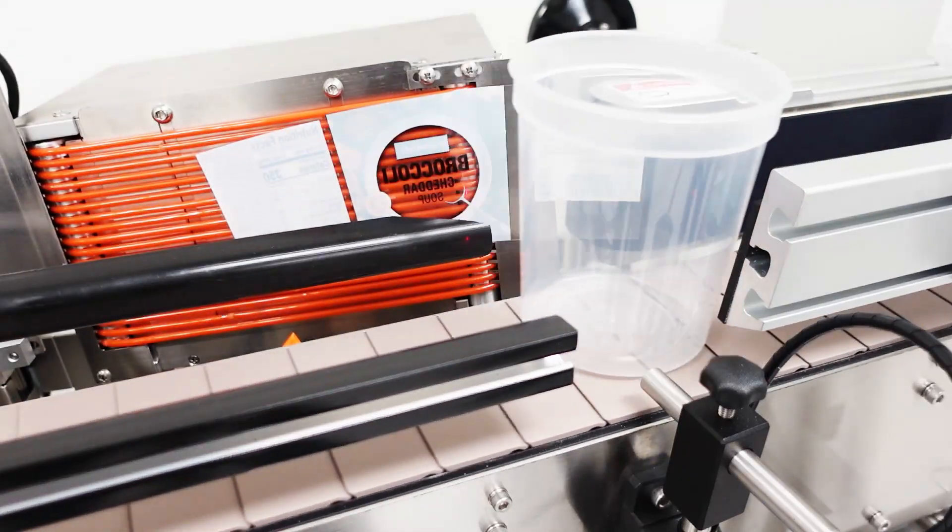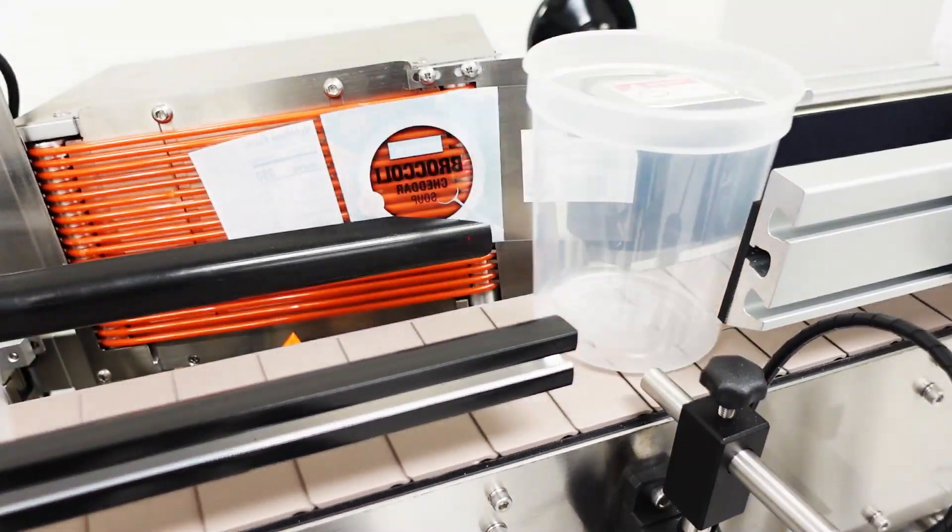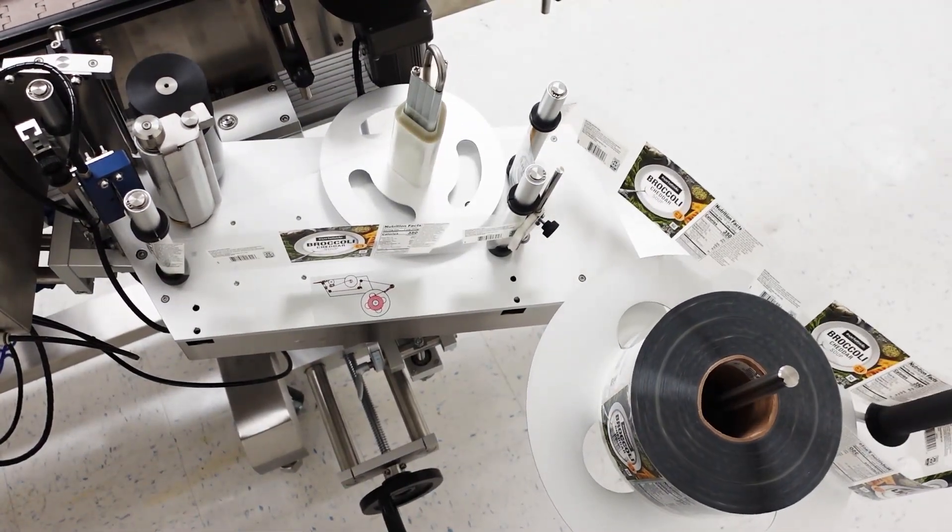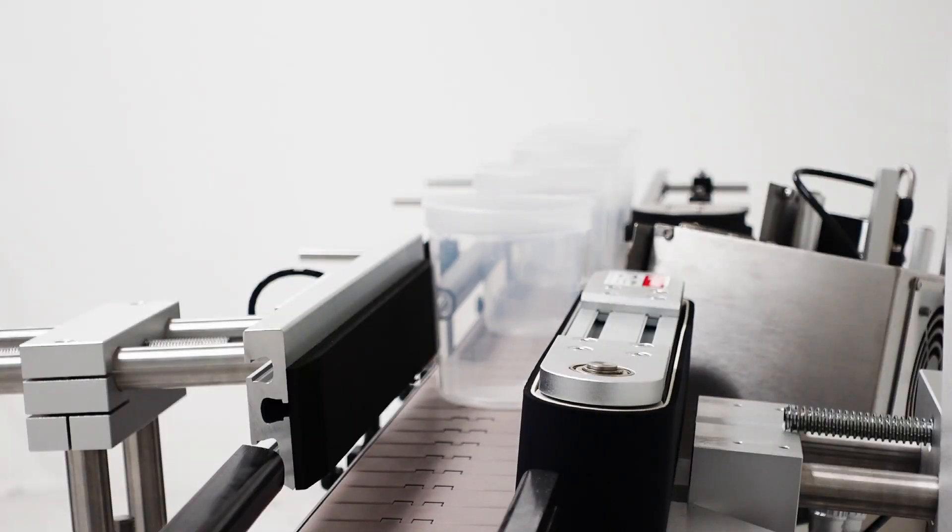When the bottle sensor sees a bottle, it signals the drive roller to pull a label across the peel plate. The flagged label's sticky leading edge attaches to the bottle as it passes the peel plate.